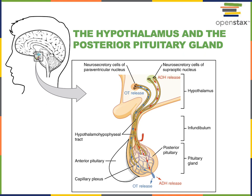The cell body of these neurons is found in the hypothalamus, and their axon extends down into the posterior pituitary and releases neurohormones — hormones released by neurons. These neurohormones are oxytocin and antidiuretic hormone, two hormones released by the posterior pituitary gland, although they are actually produced by cells found in the hypothalamus.